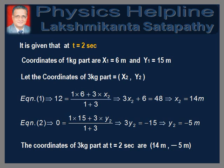At t equal to 2 seconds, the coordinates of the 1 kg part are x1 equal to 6 meters and y1 equal to 15 meters. Let the coordinates of the 3 kg part be x2, y2. Equation 1 implies: 12 equals (1 × 6 + 3 × x2) divided by (1 + 3), which gives x2 equal to 14 meters. Equation 2 implies: 0 equals (1 × 15 + 3 × y2) divided by (1 + 3), which gives y2 equal to minus 5 meters. Therefore, the coordinates of the 3 kg part at t equal to 2 seconds are 14 meters and minus 5 meters.